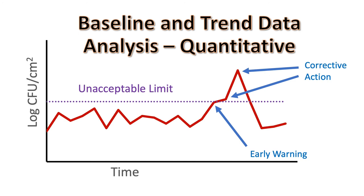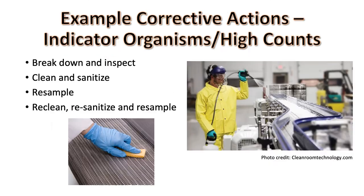For quantitative data that you will generate for indicator organisms, you will want to establish baselines and trend data for each location or area. Trends are often easier to visualize if you plot your data on a graph. This will allow you to determine when to implement corrective actions and to document their effectiveness. This usually involves additional cleaning and sanitation of the equipment or area and then resampling and retesting until the results are back into compliance. It is also useful to try to identify the circumstances that led to the higher counts in the first place, to see if a longer-term corrective action should be implemented, such as adjusting the frequency of cleaning or sanitation procedures.